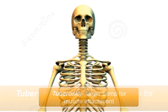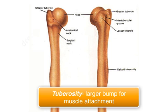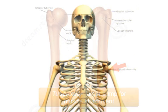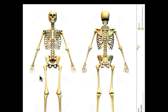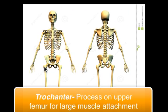Whereas a tuberosity, such as the deltoid tuberosity, is a larger bump for muscle attachment. And finally, the trochanter — here on the proximal end of the femur — is the large trochanter. This is called the greater trochanter, and then down behind you can see, peeking out there, the lesser trochanter. Those are also for muscle attachments.